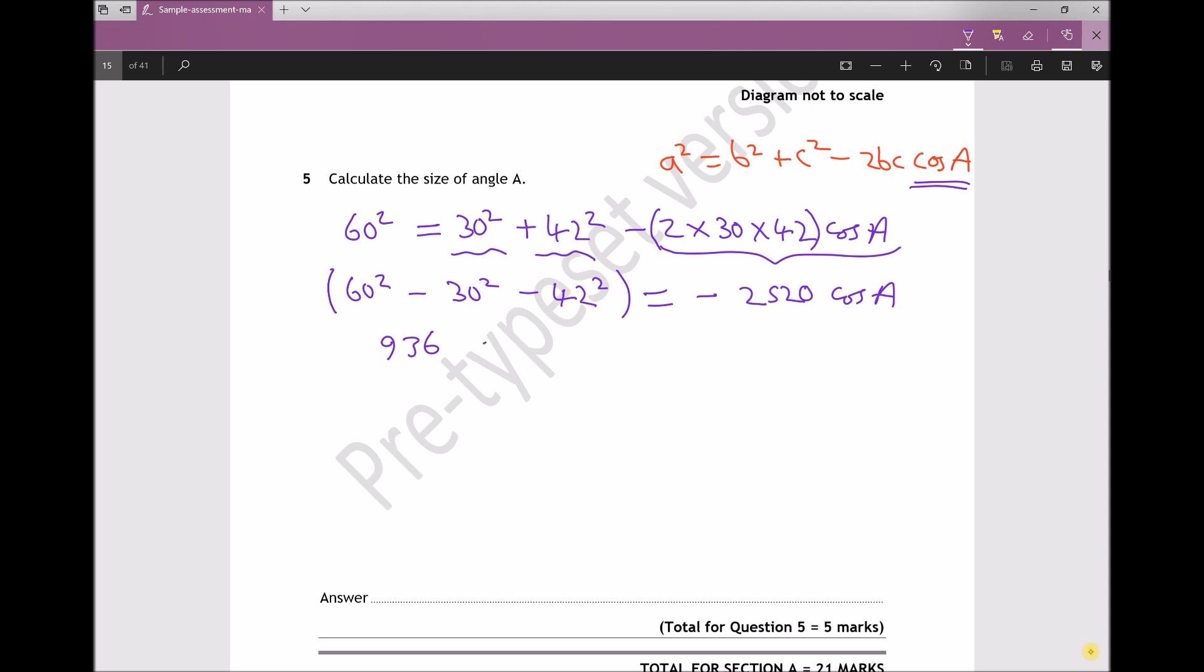Therefore, 936 equals minus 2520 cos A. Make sure you don't lose that minus sign. The next thing I'm going to do is divide each side by minus 2520. I could alternatively do this in two steps—change the sign of each side and then divide by 2520—but that just introduces an extra step. So I'm dividing by minus 2520.